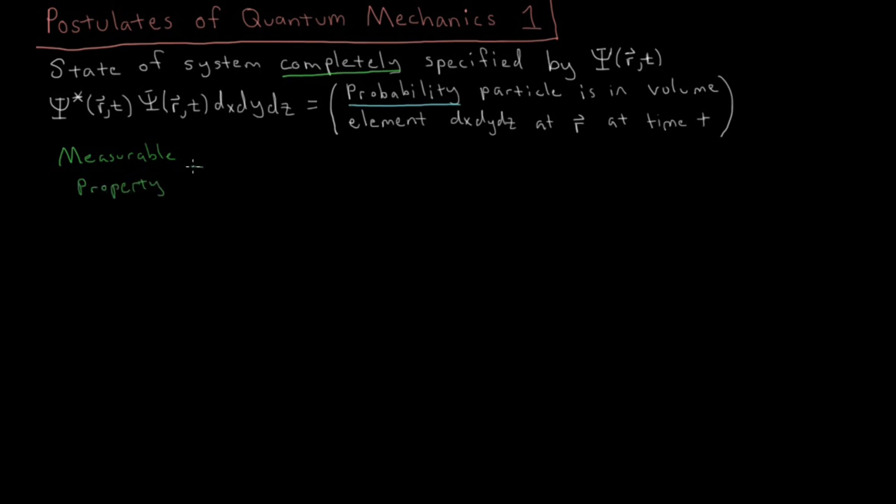So if we've got a physical property and we can measure that property, that's called an observable. We can observe a value for that property.